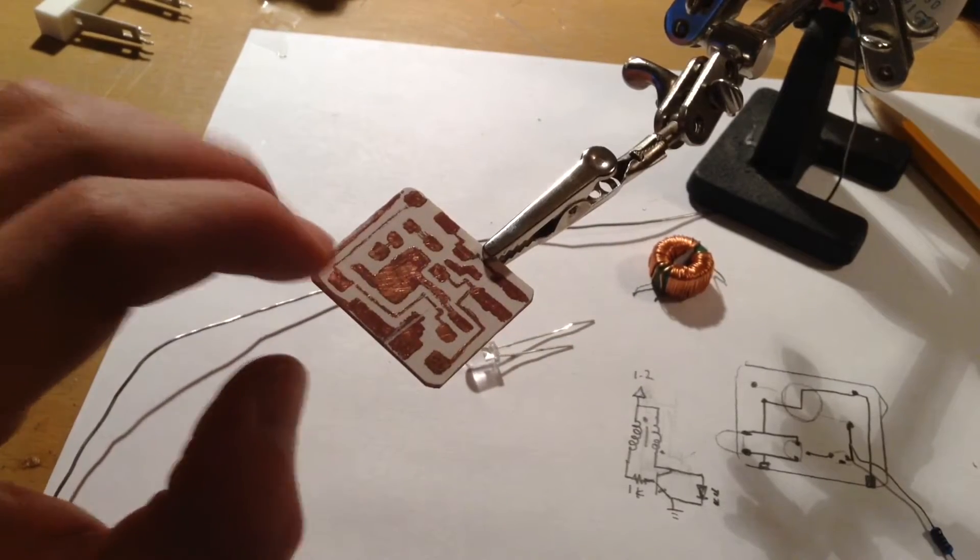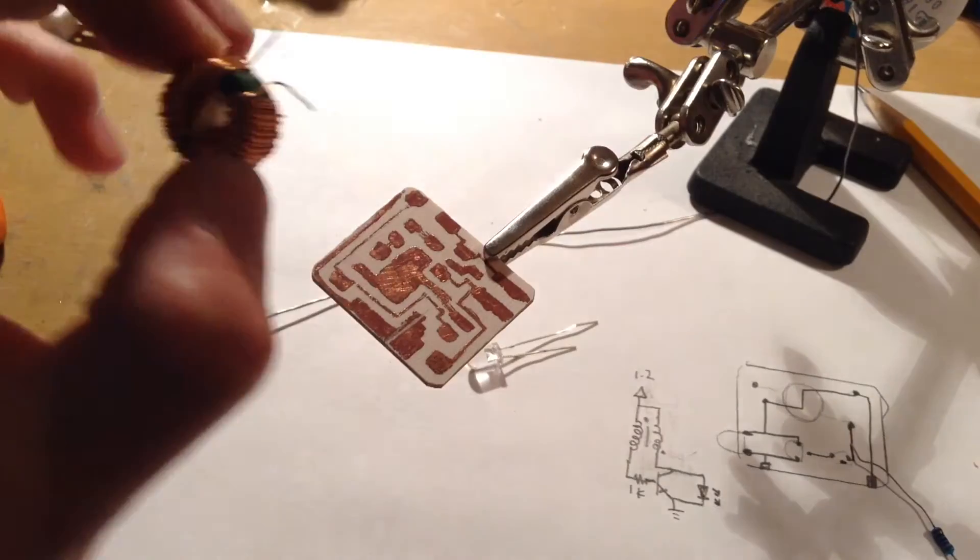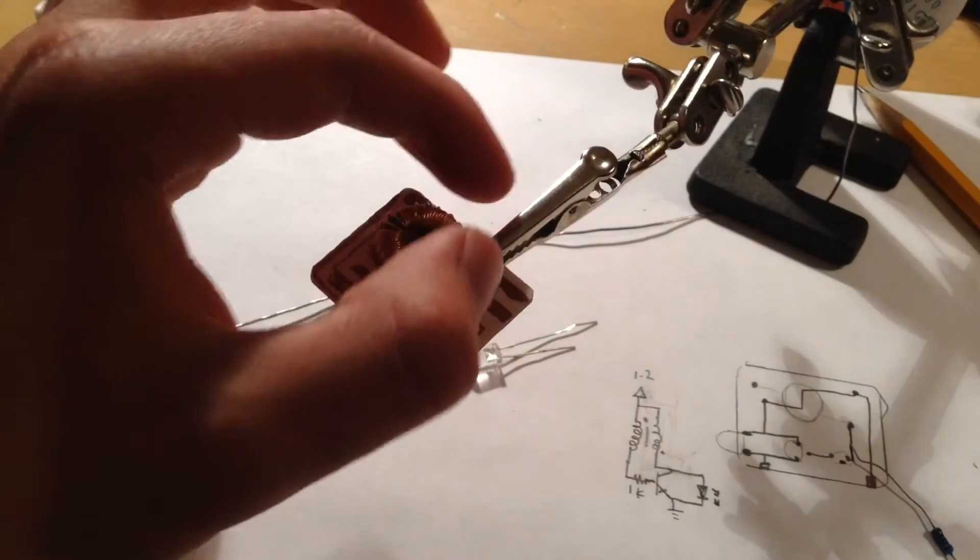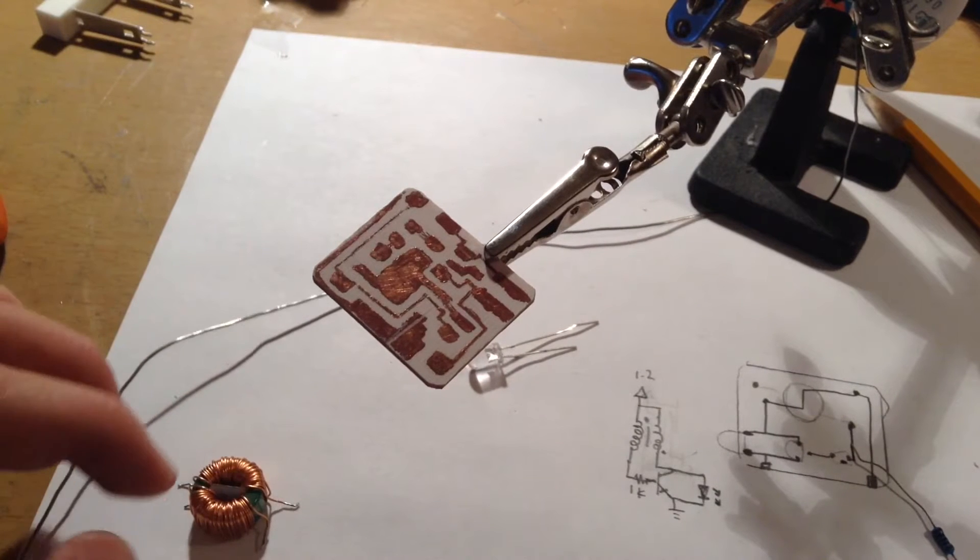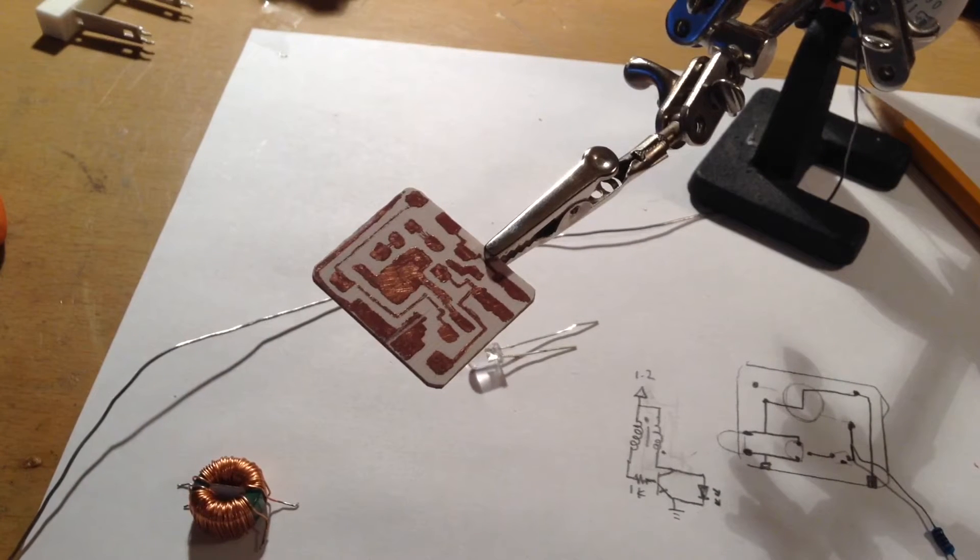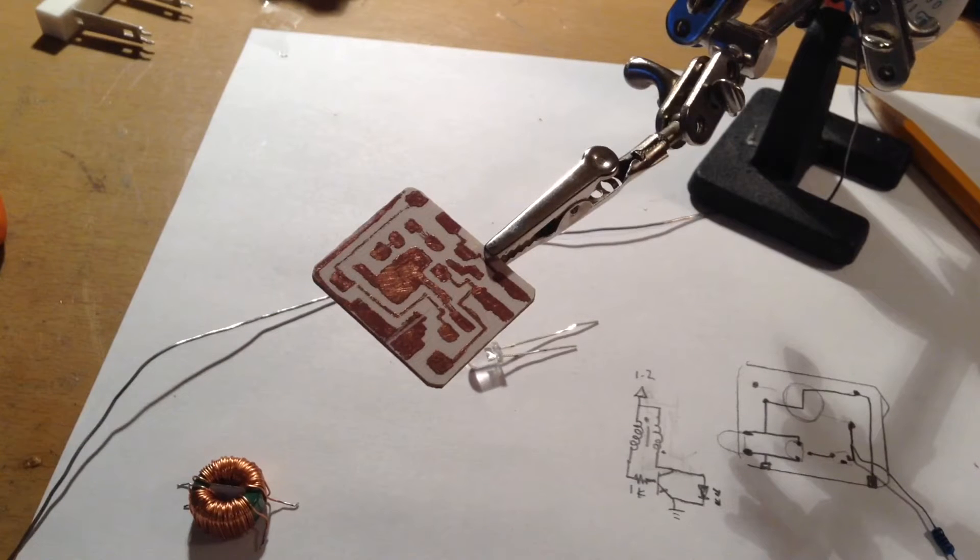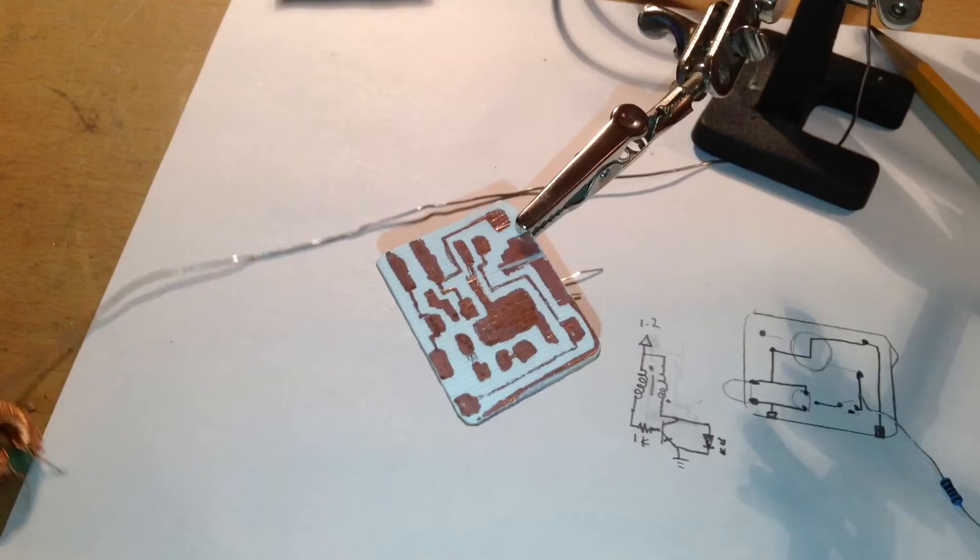So in this part, I'm going to take my components, solder them onto this circuit board that I manufactured, and show you how to make this. In the previous part, I etched this circuit board inside a ferric chloride solution. So let's get started.